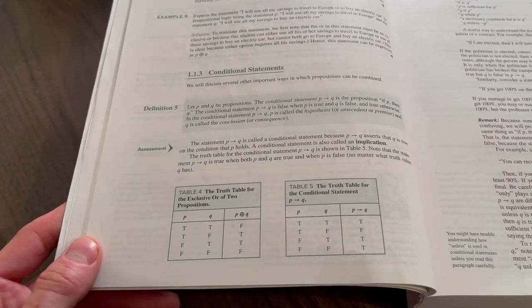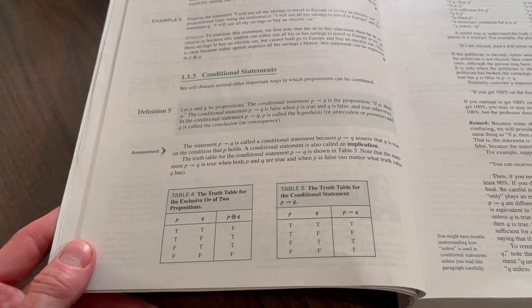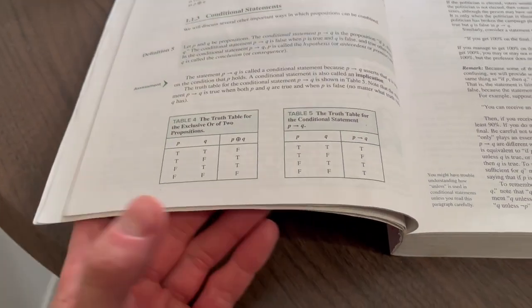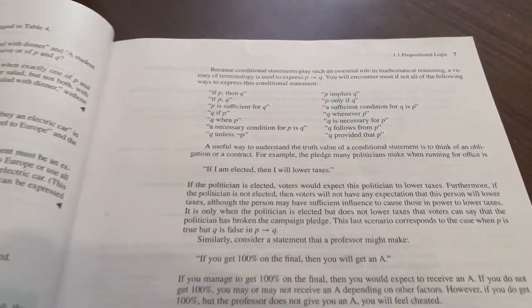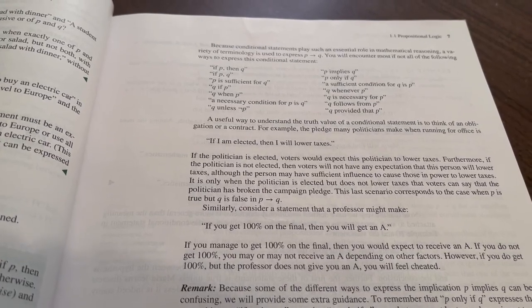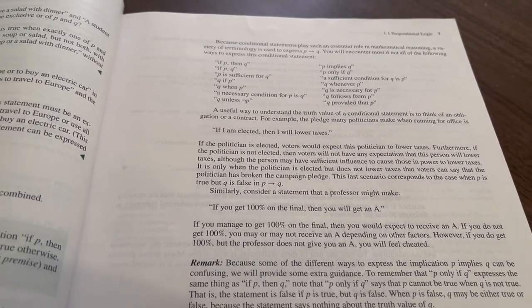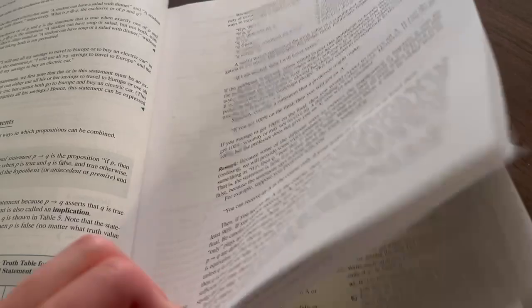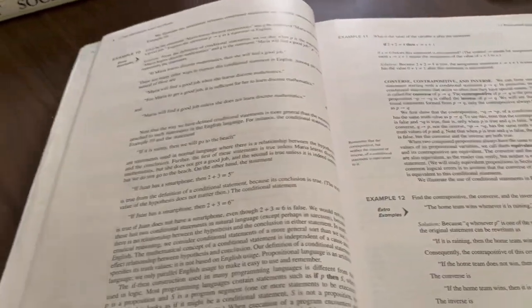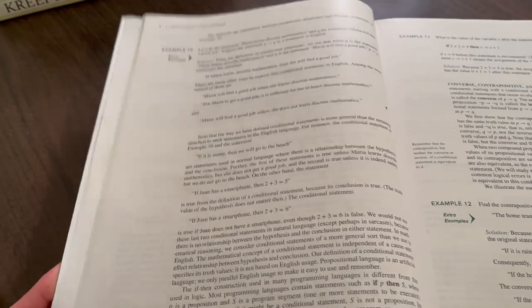We have conditional statements, which I think are most confusing of the various connectives. We have our truth table. And there are different ways to express a conditional. For example, if P, then Q, or P implies Q, P only if Q, a sufficient condition for Q is P, and so on and so forth.